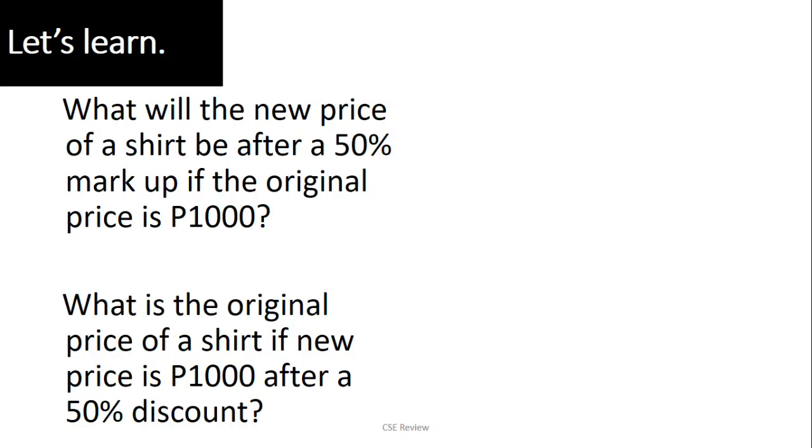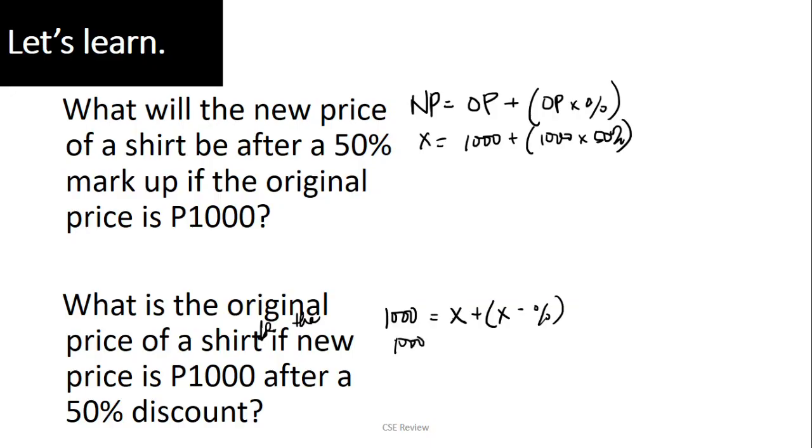Now, I'm going to demonstrate using this sample set. Sabi, what will the new price of a shirt be after 50% markup if the original price is 1,000? If you're using the formula, this is going to be new price equals original price plus original price times the percentage. So X equals 1,000 plus 1,000 times 50%. The second question, what is the original price of a shirt after 50% discount? The formula is the same but you fill in different information. Dahil ang new price mo is 1,000, this is 1,000 equals X plus X times the percentage. 1,000 equals X plus X times 50%.